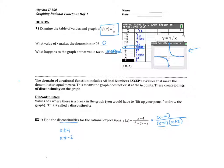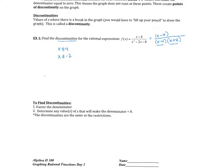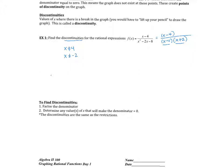Now we're going to look more specifically at what those points of discontinuity are. Here are some steps to find points of discontinuities — it's basically the same thing as finding restrictions. You're going to factor your denominator and determine any values of x that are going to make the denominator 0, and those are going to be your points of discontinuity.